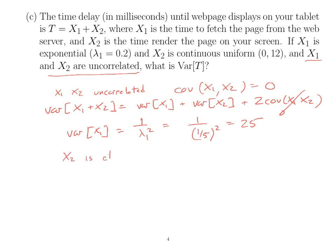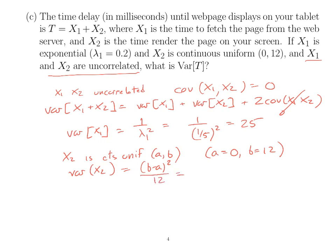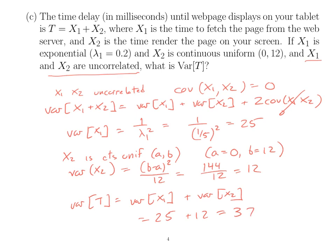X₂ is continuous uniform on [A, B] with A = 0 and B = 12. You should remember that the variance is (B - A)²/12. That's 144/12, which equals 12. So the variance of T equals the variance of X₁ plus the variance of X₂, which is 25 + 12 = 37.